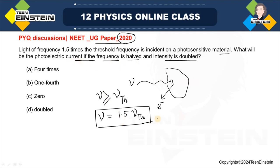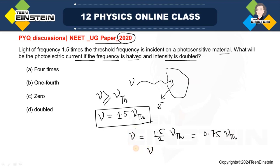Now in the second case, if the frequency is made half — it was earlier 1.5 times the threshold frequency, so now it becomes 1.5 divided by 2, which is 0.75 times the threshold frequency. This means the new frequency ν′ of the incident light is less than the threshold frequency. With this frequency, we cannot have the photoelectric effect happening.